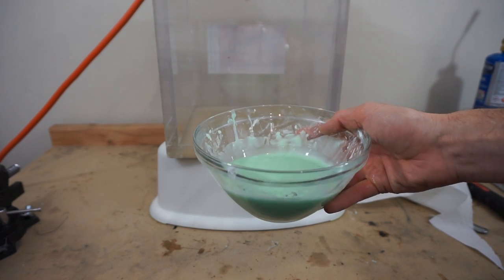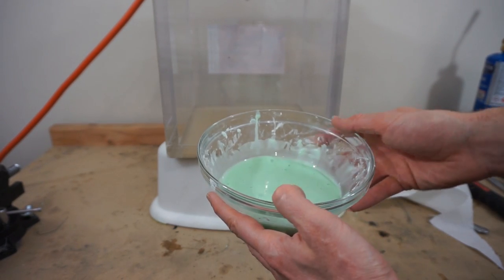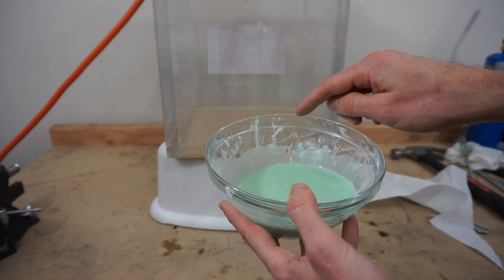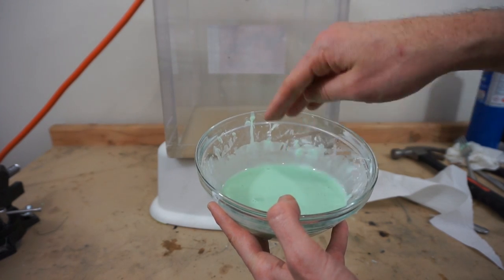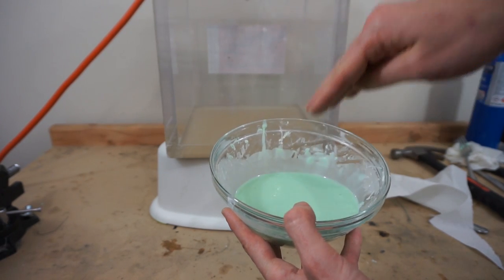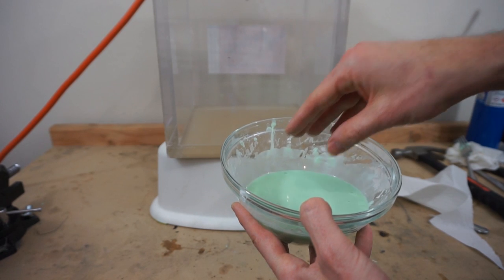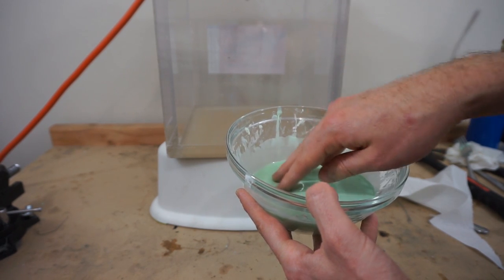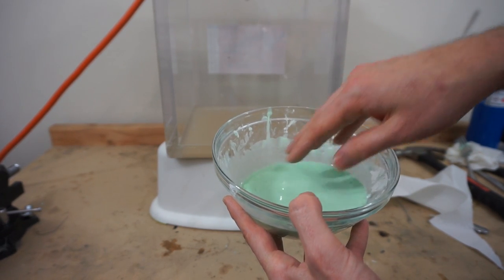So Oobleck is a really cool fluid. It's a non-Newtonian fluid. So what that means is that its viscosity is dependent on the shear rate. So the harder you try to move it, the more it acts like a solid. And when you don't try to move it, it acts like a liquid.